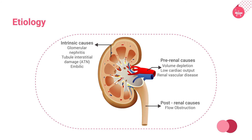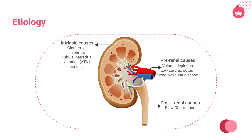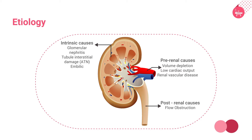Acute kidney injury can be divided into three broad etiologic categories: prerenal AKI, intrinsic AKI, and postrenal. Prerenal refers to hypoperfusion of the kidneys without parenchymal damage. Postrenal, or obstructive AKI, is characterized by acute blockage of the urinary tract. In intrinsic dysfunction, acute damage to the renal parenchyma exists, such as acute tubular necrosis, acute interstitial nephritis, or acute glomerular nephritis.